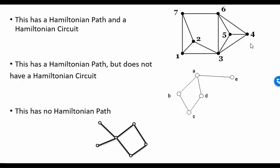In this first figure, we have a Hamiltonian path and a Hamiltonian circuit. I can follow the numbers 1, 2, 3, 4, 5, 6, 7 and back to 1 — that would be a Hamiltonian circuit. If I go 1, 2, 3, 4, 5, 6, 7 and do not return to 1, that would just be a path. Notice that I did not cover every edge — I only visited the vertices.